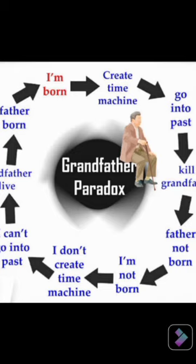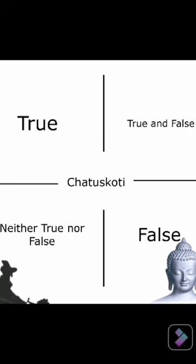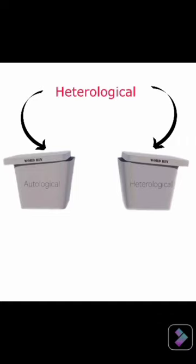The first answer is based on Eastern philosophy, which says something can be true and false, and none of them, at the same time. So it makes the word 'auto' fall into the none-of-them category, and 'hetero' fall into two categories.